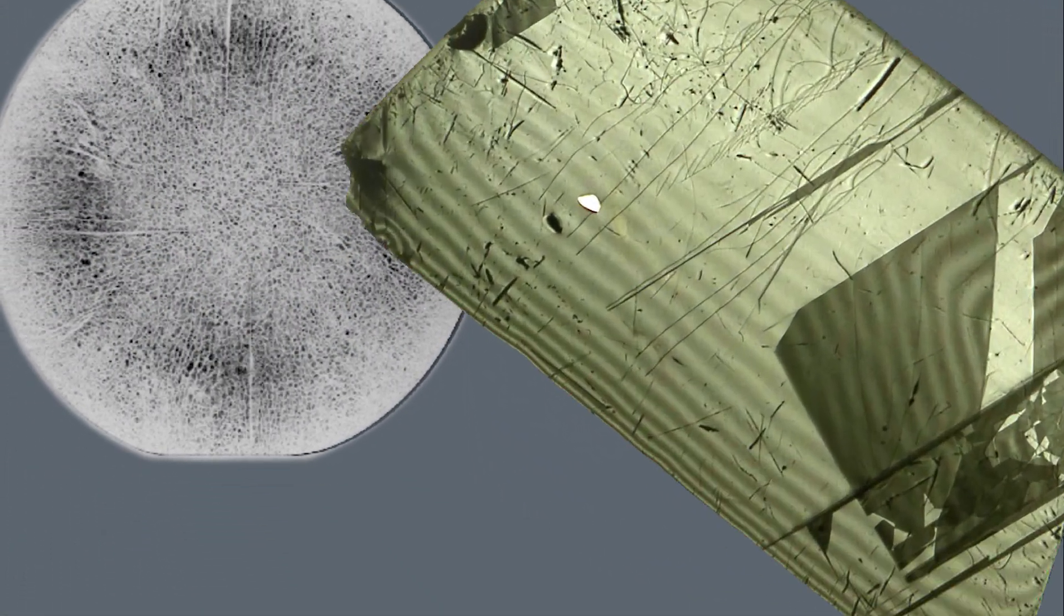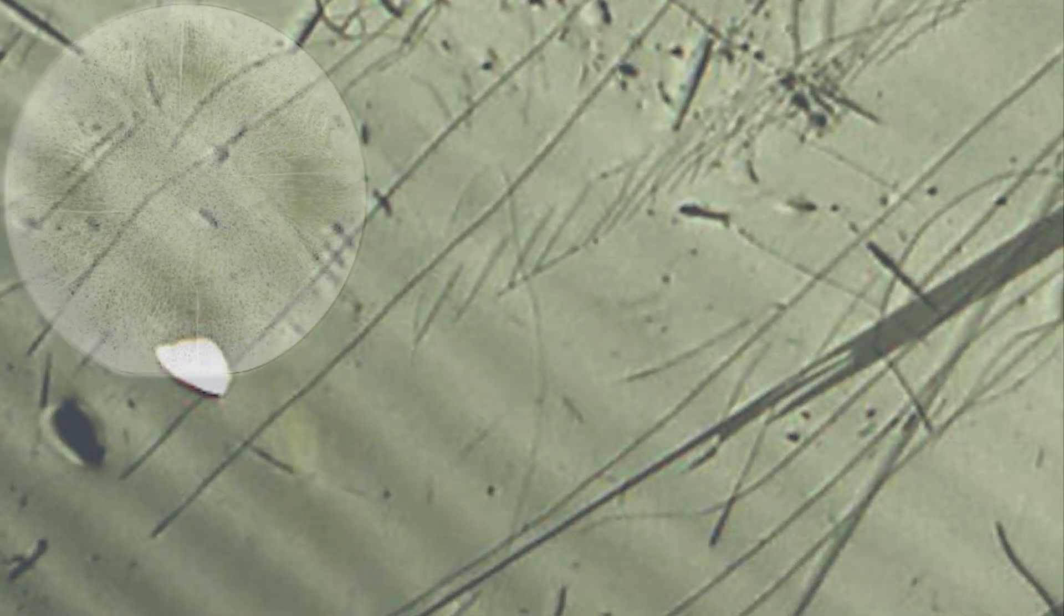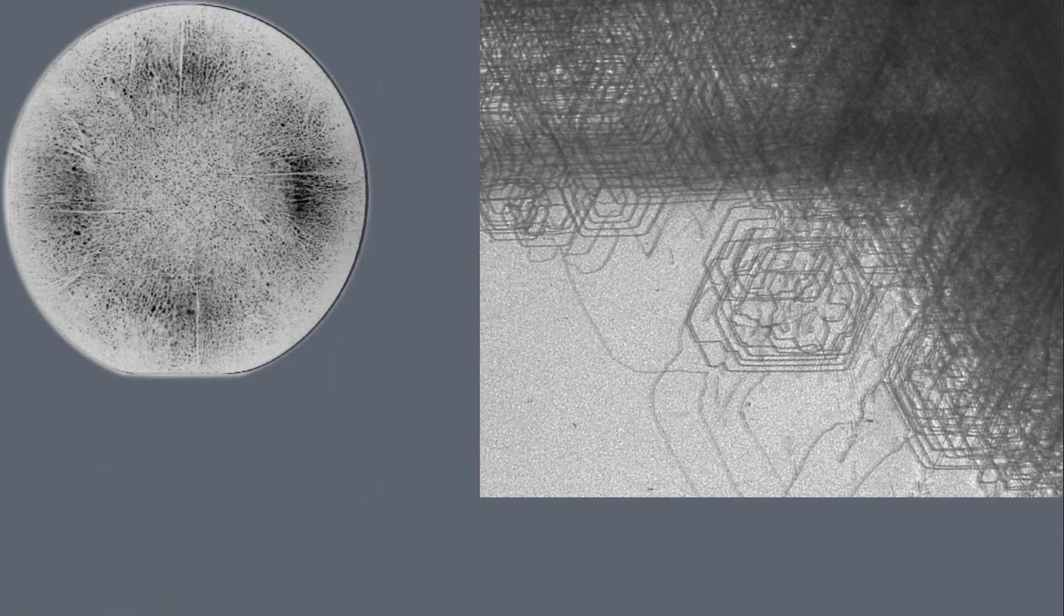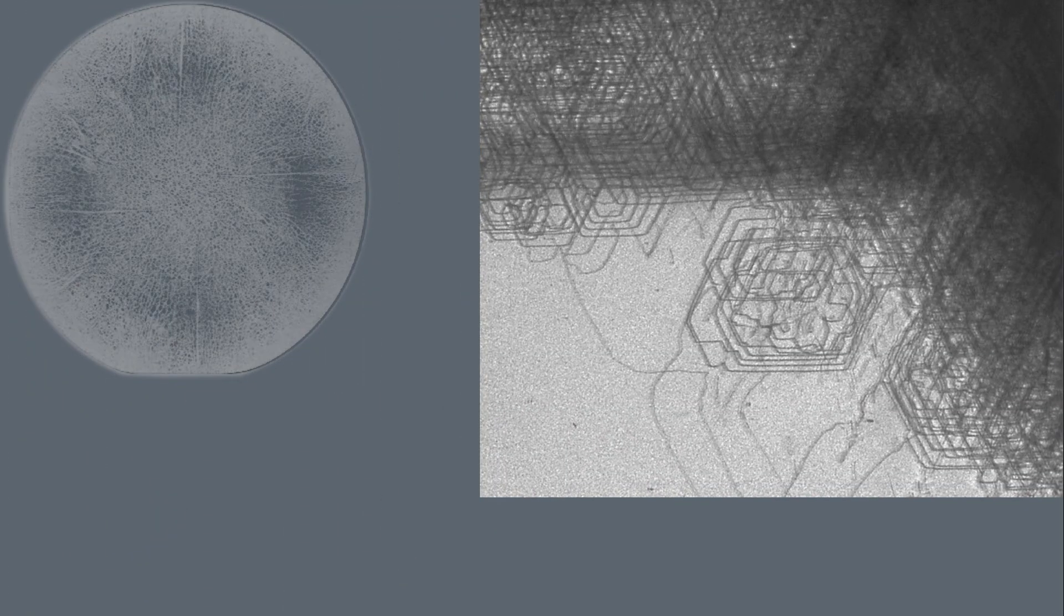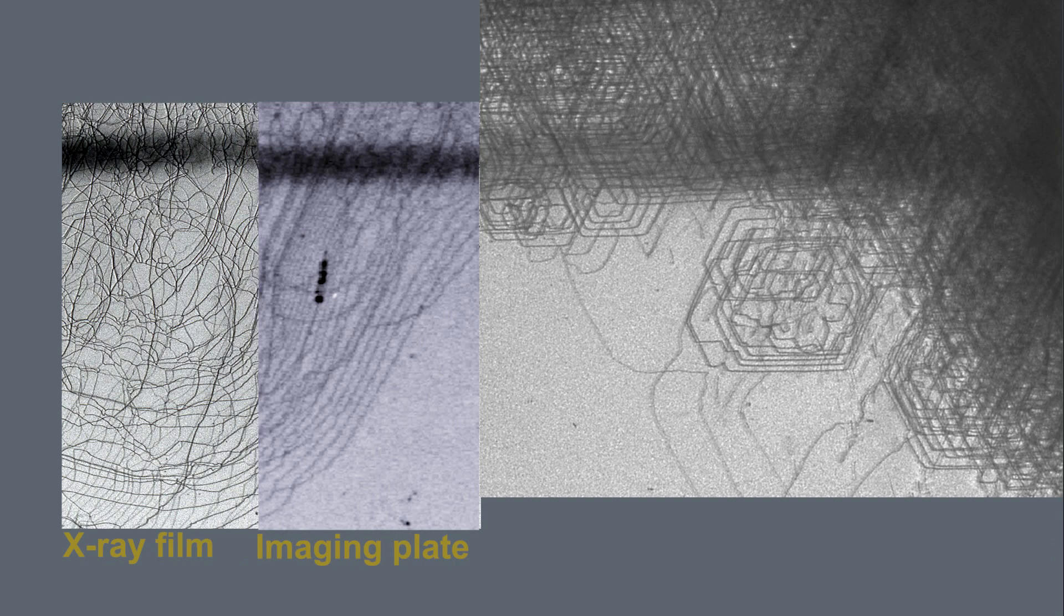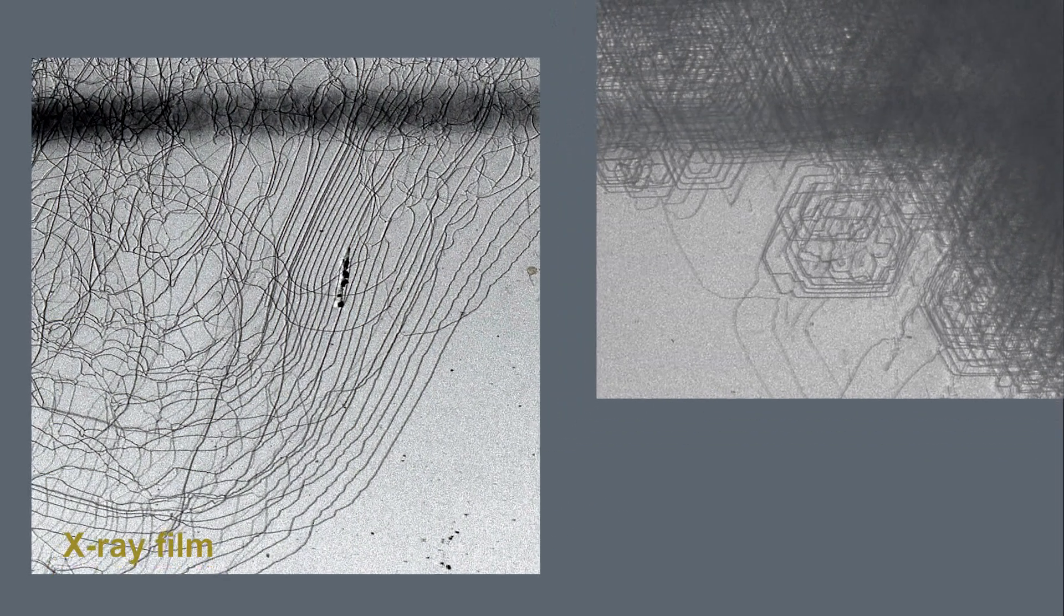A typical application of XRT is to image lattice defects in a wafer. Defects change how much intensity reaches the detector. Large defect density decreases the overall signal intensity. Localized defects on a scale resolvable by the detector show local intensity drop or increase.